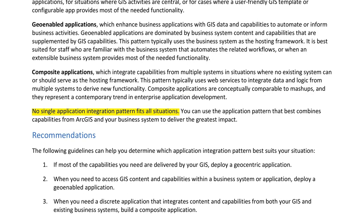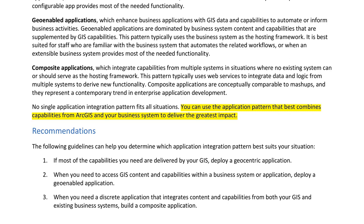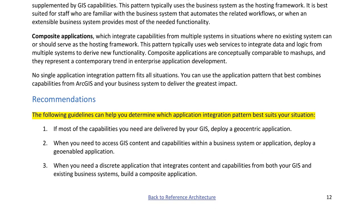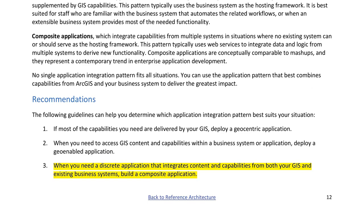No single application integration pattern fits all situations. You can use the pattern that best combines capabilities from ArcGIS and your business system to deliver the greatest impact. Recommendations: 1. If most capabilities you need are delivered by your GIS, deploy a geocentric application. 2. When you need to access GIS content within a business system, deploy a geo-enabled application. 3. When you need a discrete application integrating content from both your GIS and existing business systems, build a composite application.